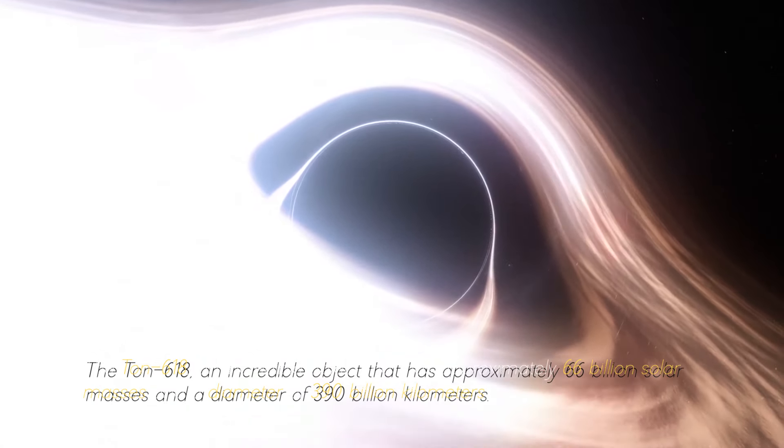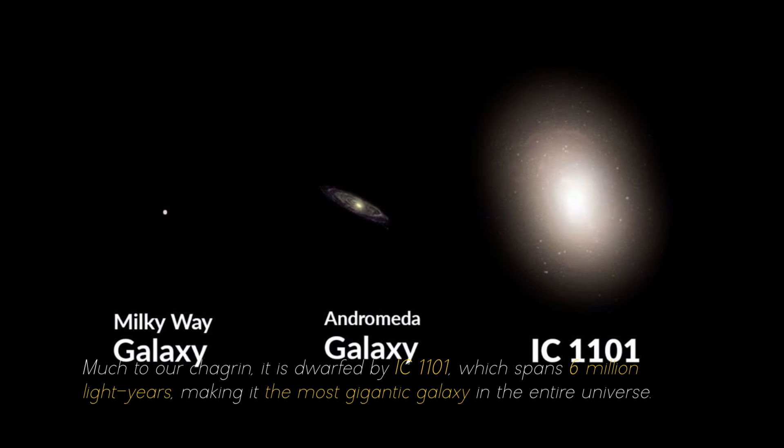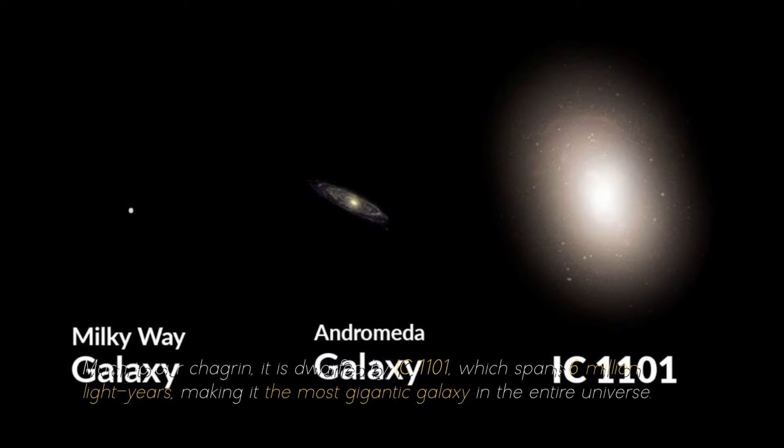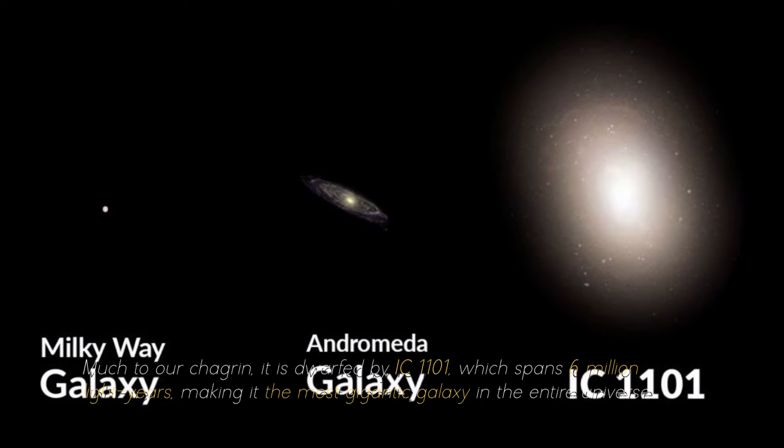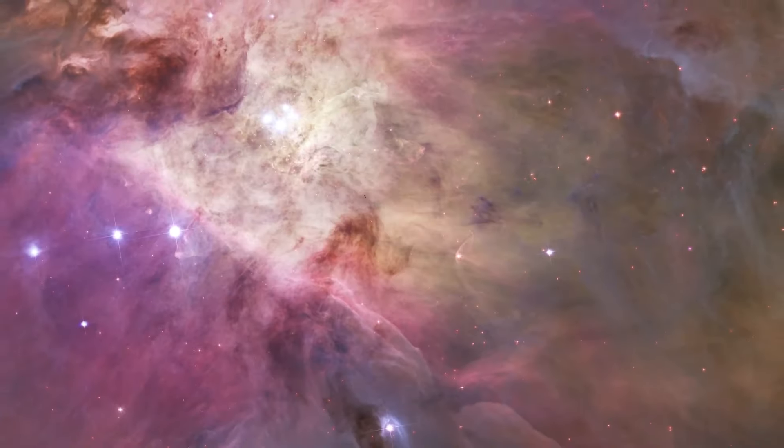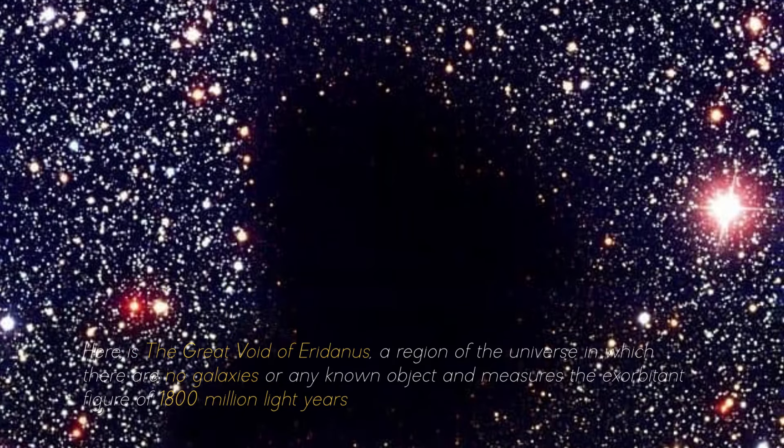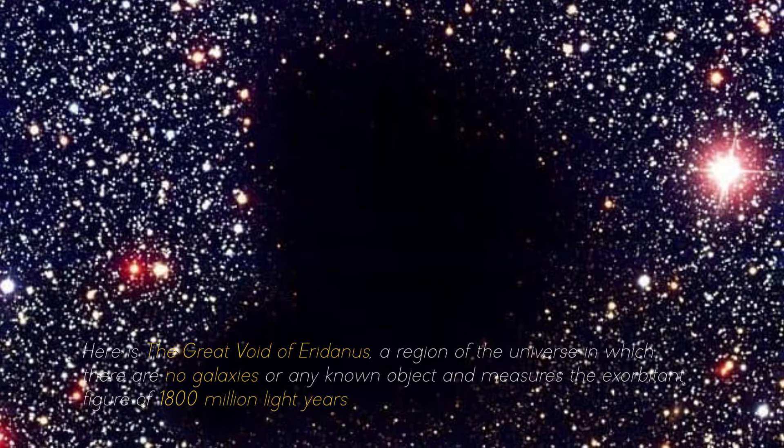Much to our charge range, it is dwarfed by the IC 1101, which spans 6 million light years, making it the most gigantic galaxy in the entire universe. Plunging into the vastness of space, there are even more colossal objects that could degrade the largest galaxy in the cosmos. Here is the Great Void of Eridanias, a region of the universe in which there are no galaxies or any known object, and measures the exorbitant figure of 1,800 million light years.